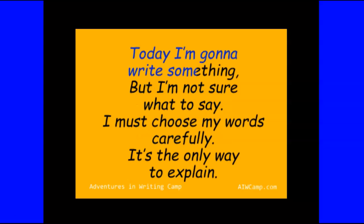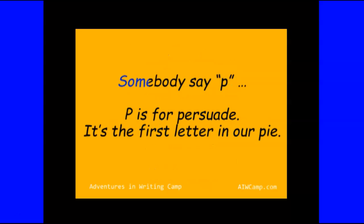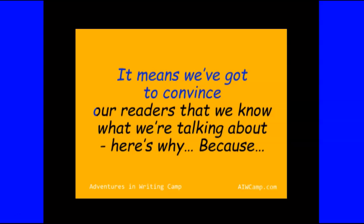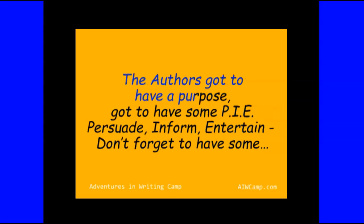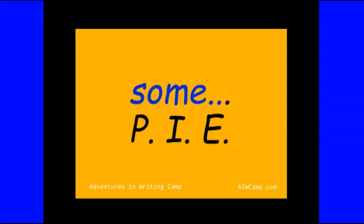Today I'm gonna write something, but I'm not sure what to say. I must choose my words carefully — it's the only way to explain. Somebody say P! P is for persuade, it's the first letter in our pie. It means we've got to convince our readers that we know what we're talking about. Because the author's gotta have a purpose, got to have some pie. Persuade, inform, entertain — don't forget to have some pie.